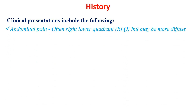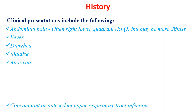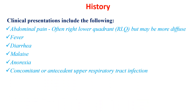The clinical presentation includes abdominal pain, mainly in the right lower quadrant, but it might be more diffuse, fever, diarrhea, malaise, anorexia, concomitant or antecedent upper respiratory tract infection, and nausea and vomiting.